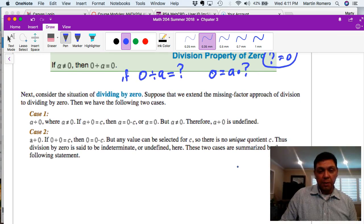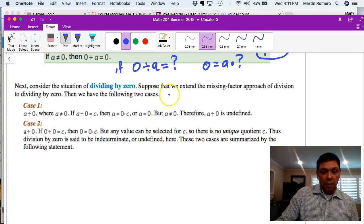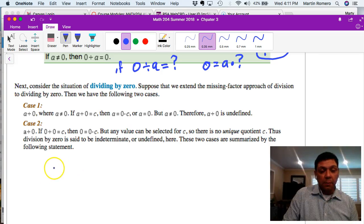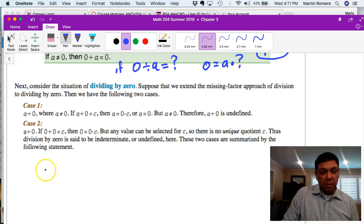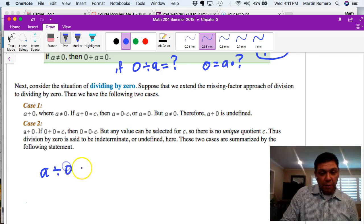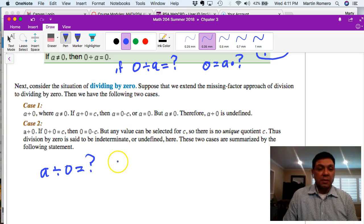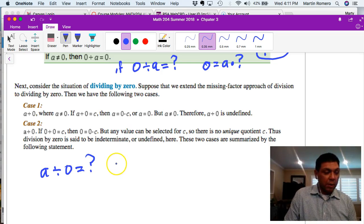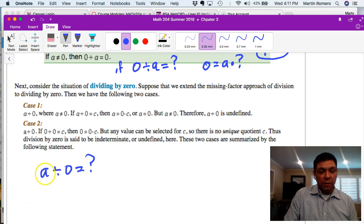Now we have a more complicated situation here. How about this other question of a divided by zero? What does that equal? A lot of people want to think that it has to equal zero, maybe one. So let's play that same game that we have up here.